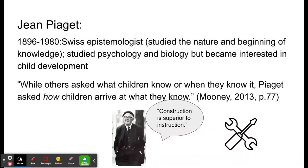Piaget, in contrast, only looked at cognitive development as going from the age of zero to twelve. He knew that people were lifelong learners, but he really focused on development from zero to twelve and believed that was kind of the extent of cognitive development.